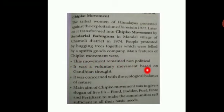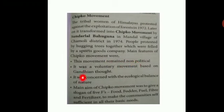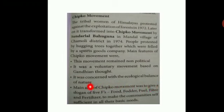The main features of the Chipko movement were: it remained non-political, it was a voluntary movement based on Gandhian thought, and it was concerned with the ecological balance of nature. The main aim of Chipko movement was to give a slogan of 5 Fs — food, fodder, fuel, fiber, and fertilizer — to make the community self-sufficient in all their basic needs.